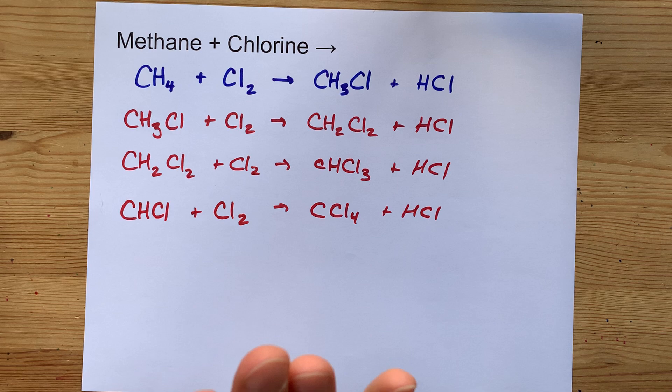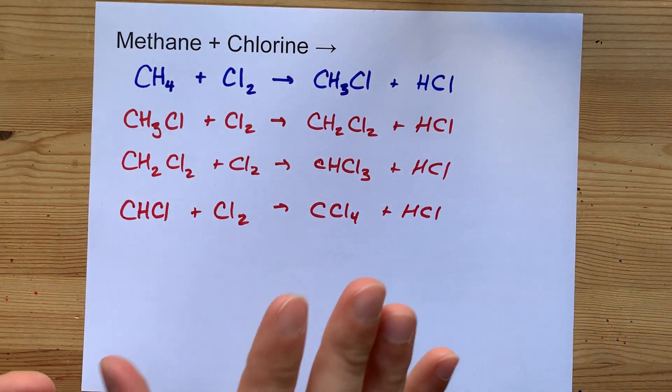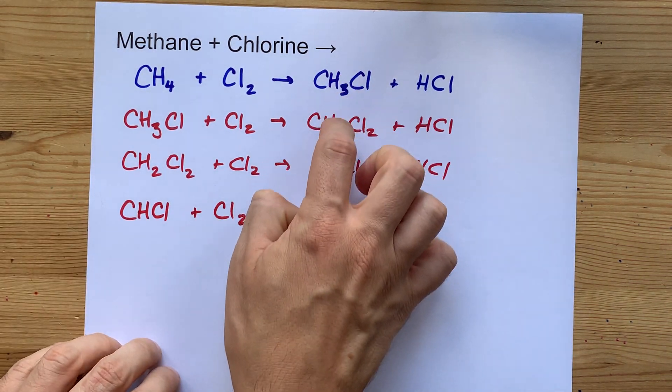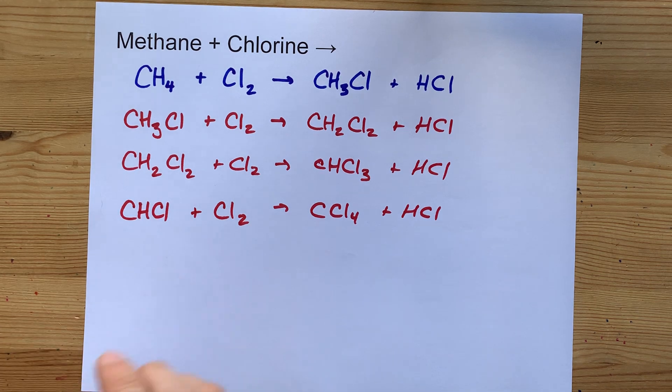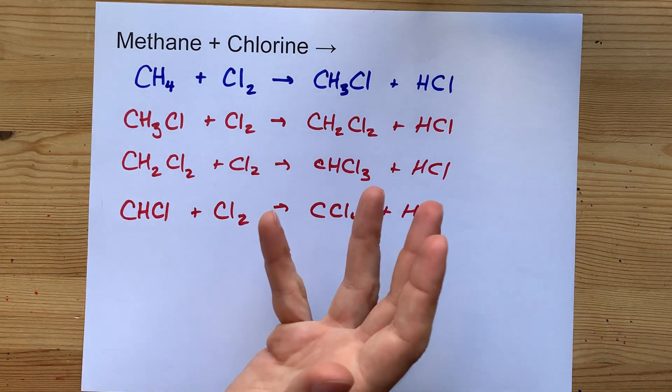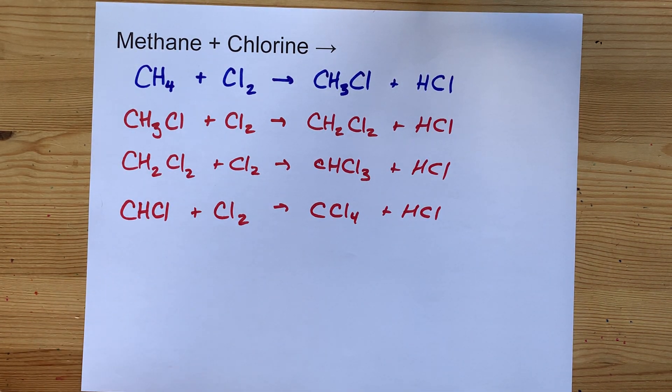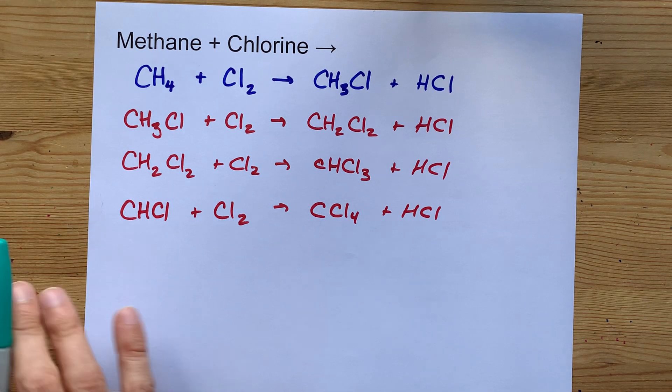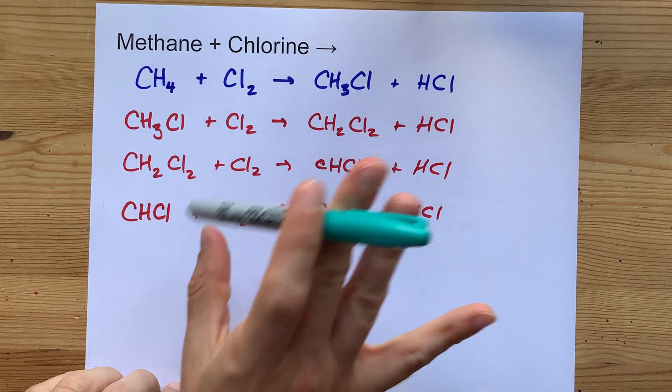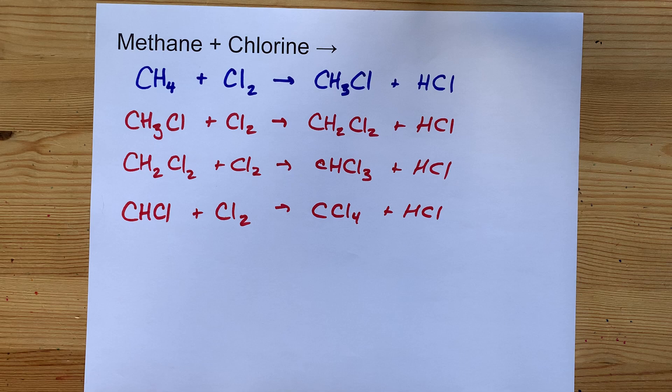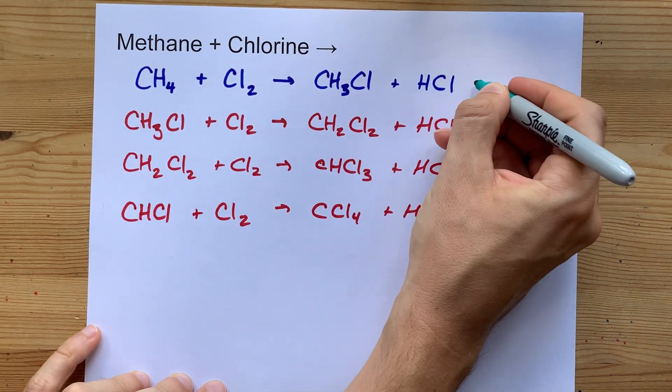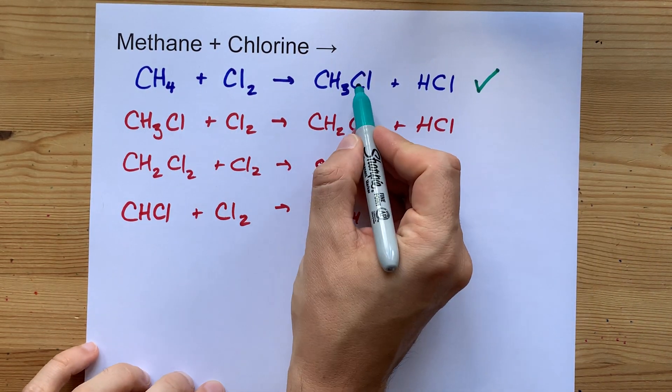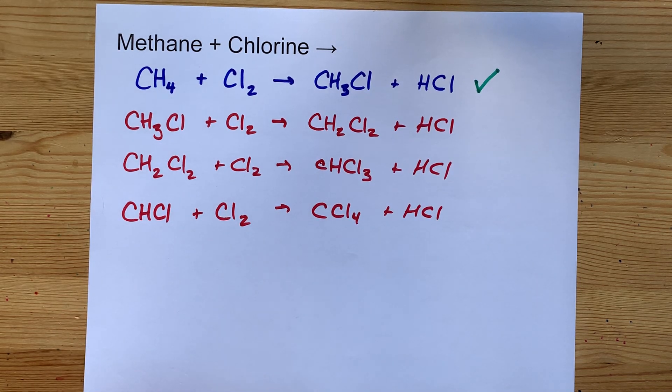So you can't specifically target one of these product molecules and hope that that's just what you have as your final product. You're going to end up with a mixture when you're doing this reaction. Now, that being said, methane plus chlorine can give you chloromethane. Perhaps that's what your teacher wants to hear.